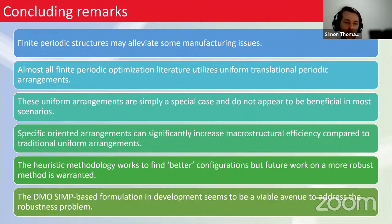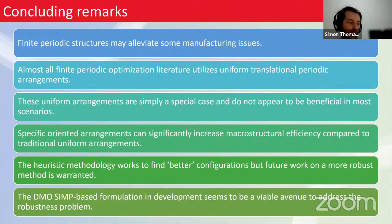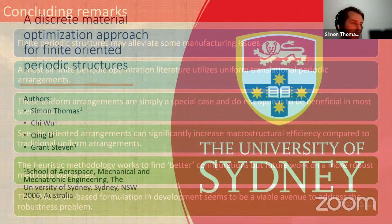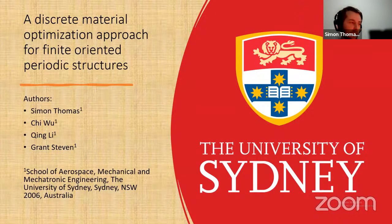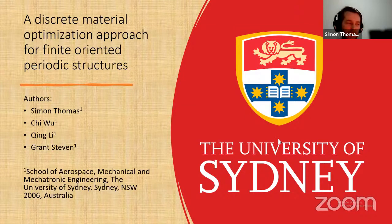Specific oriented arrangements can significantly increase macro structural efficiency compared to traditional arrangements. We presented a heuristic method to find better configurations, but future work providing a more robust solution is warranted. A DMO-based solution is currently in development. The follow-up topic is a discrete material optimization approach for finite oriented periodic structures, with the same authors plus Chi Wu, also from the University of Sydney.